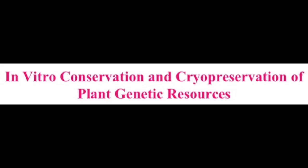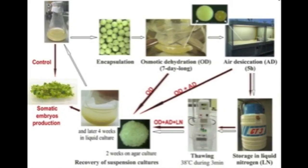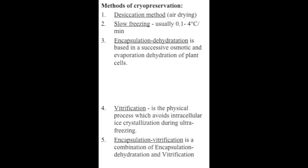Lastly, cryopreservation is the storage at ultra-low temperatures of organs and tissues in vitro culture, such as buds, shoot tips, zygotic and somatic embryos, pollen, and cell cultures. Cryopreservation offers maximum stability of phenotypic and genotypic characteristics of the stored plant material, and such material can be stored for unlimited periods. There are several methods of plant material preparation for cryopreservation: desiccation, slow freezing, encapsulation-dehydration, vitrification, and encapsulation-vitrification.